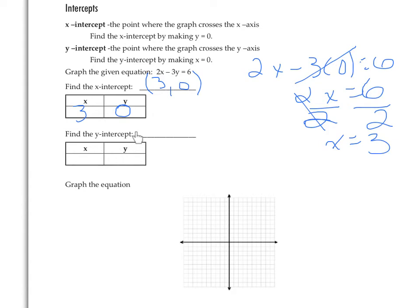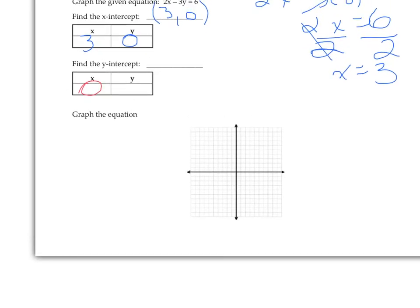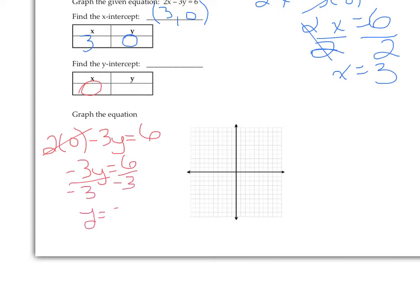To find the y-intercept, we substitute 0 for x into the same equation. So 2(0) − 3y = 6. Since 2 times 0 is 0, that term drops out, leaving −3y = 6. Dividing by −3, we get y = −2. That gives us the ordered pair (0, −2). So now we have both intercepts — the x-intercept (3, 0) found by setting y = 0, and the y-intercept (0, −2) found by setting x = 0. We'll put them on the graph and connect the dots to make a line.